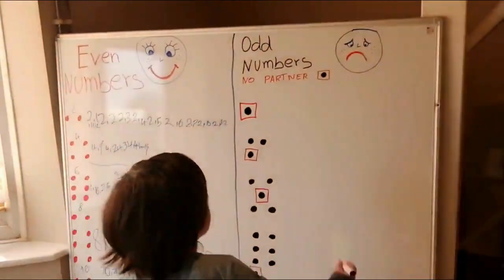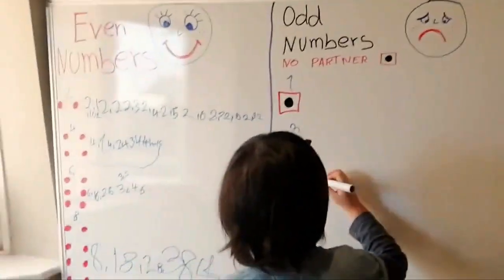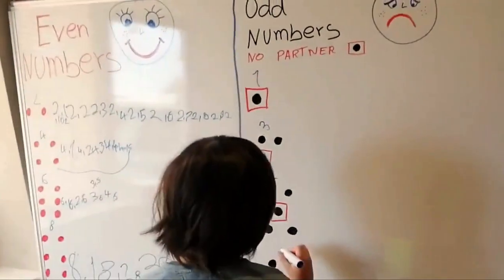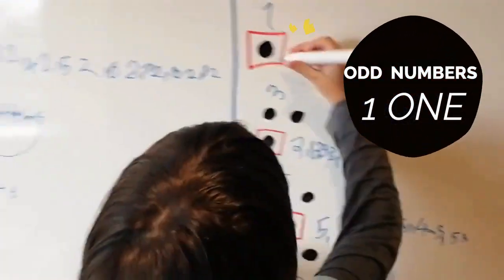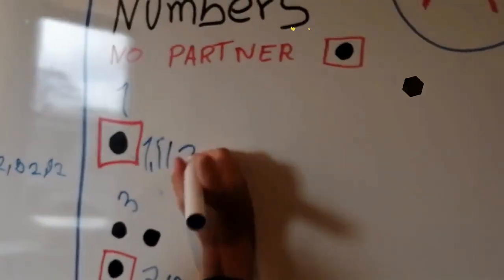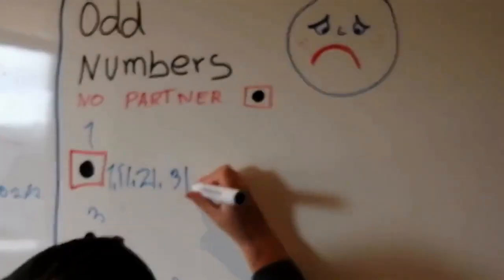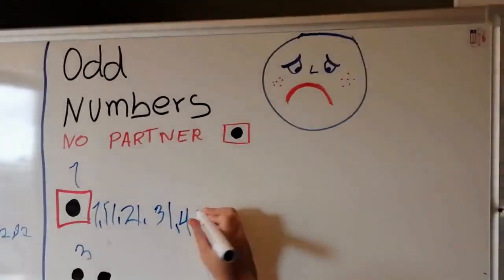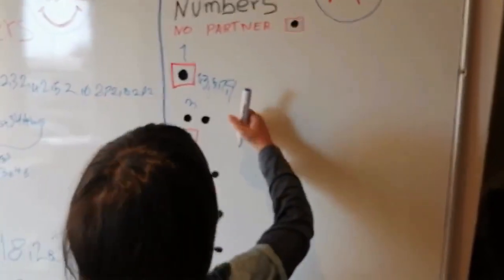Now we're going to do odd numbers, very good. The odd numbers are one, three, five, seven, and nine. One: one, eleven, twenty-one, forty-one, fifty-one.